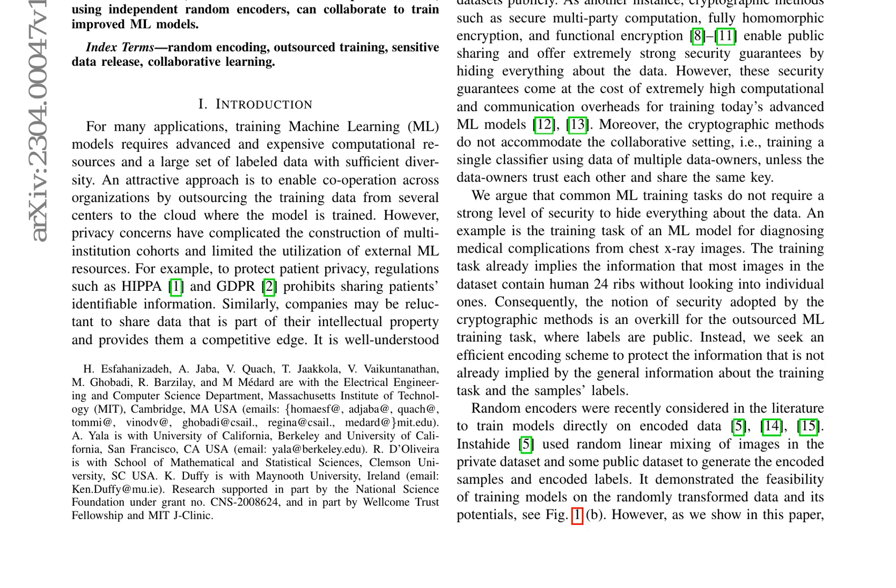The paper formulates the problem of hiding sensitive data via a random transform and introduces information-theoretic scores for privacy and utility, quantifying the performance of the probability distribution according to which the random transform is chosen.